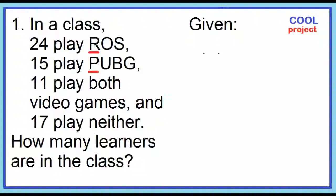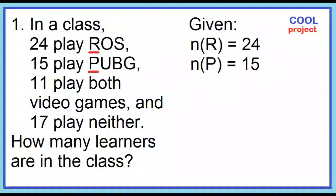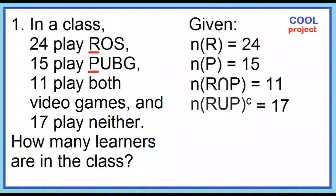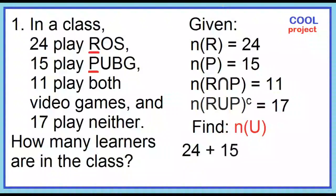Given: the cardinality of set R is 24, the cardinality of set P is 15, the cardinality of R intersection P is 11, and the cardinality of the complement of R union P is 17. Find the cardinality of the universal set U. The number of learners in the class is 24 plus 15 minus 11 plus 17, which equals 45.